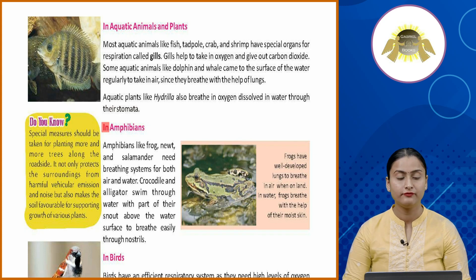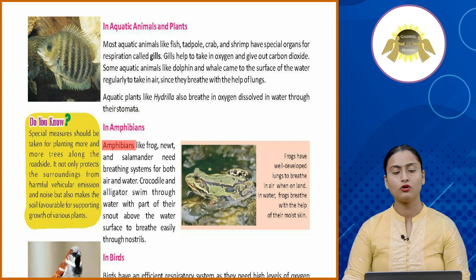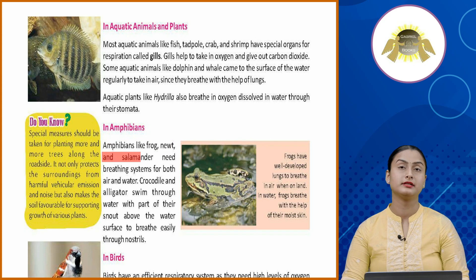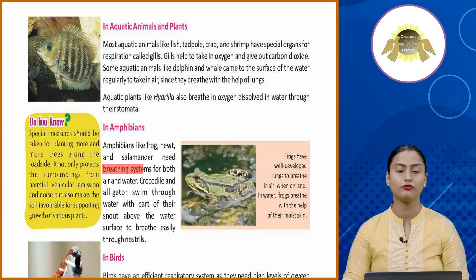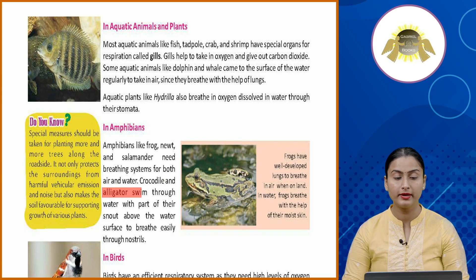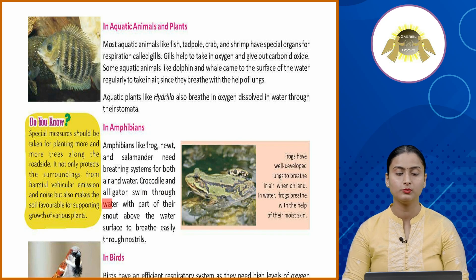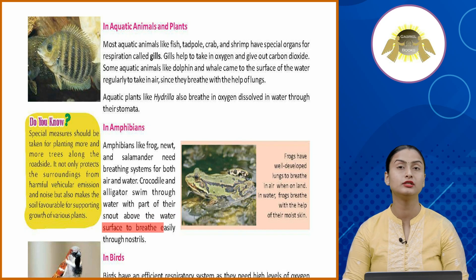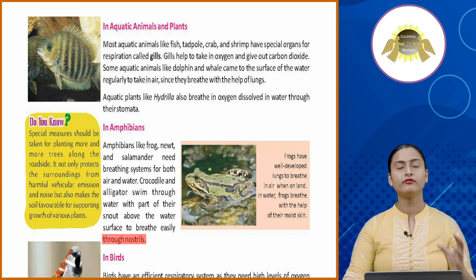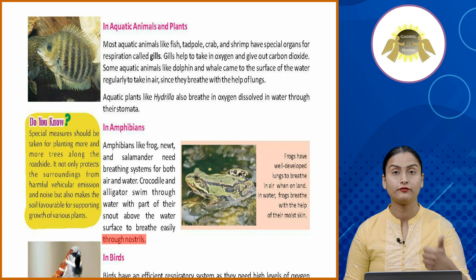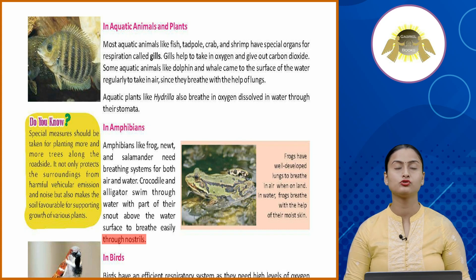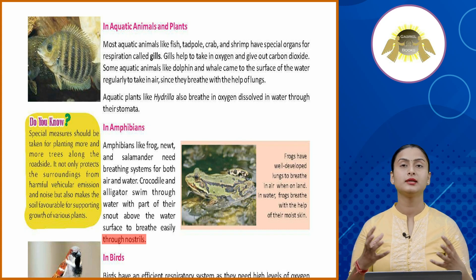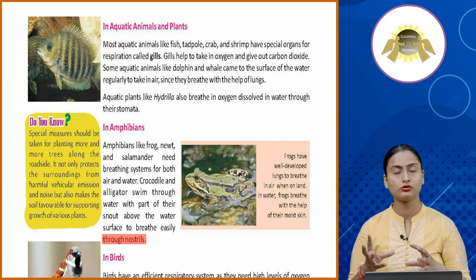In amphibians: amphibians like frog, newt, and salamander need breathing systems for both air and water. Crocodiles and alligators swim through water with part of their snout above the water's surface to breathe easily through nostrils. Amphibians like frogs and crocodiles have both lungs and skin through which they can absorb oxygen into their bodies.